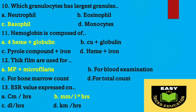Question number ten: which granulocyte has the largest granules? Option C, basophil. Question number eleven: hemoglobin is composed of — option A, four heme plus globin, is the correct answer.